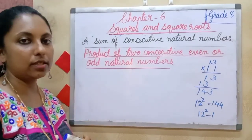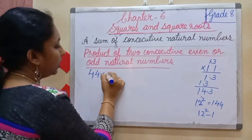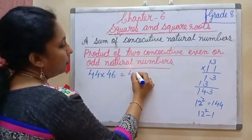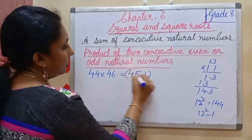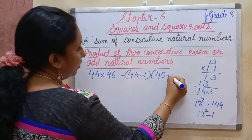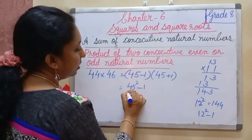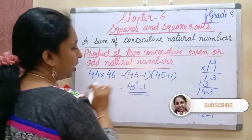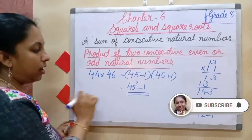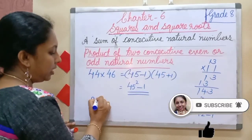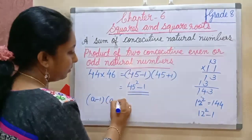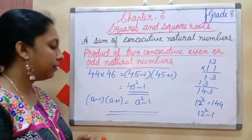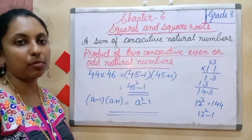Now an even number example: 44 into 46. We can write 44 as (45 minus 1) and 46 as (45 plus 1). So 44 times 46 equals (45 minus 1)(45 plus 1) equals 45 square minus 1. In general, (a minus 1) into (a plus 1) is equal to a square minus 1.